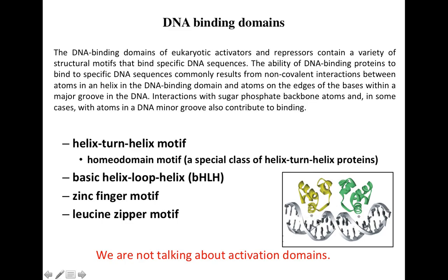The DNA binding domain interacts with the DNA, while the activation domain interacts with certain other proteins. In order to interact with the DNA, it is necessary that these proteins have a certain sequence of amino acids on their alpha helices, or whatever domain is going to interact with the DNA. This domain must have a specific sequence of amino acids so that it can interact with the specific sequence of nucleotides on the DNA — this specificity is necessary. Generally, this interaction consists of non-covalent interactions between the atoms of the amino acids on this domain and the atoms found on the edges of the nucleotides inside the DNA.